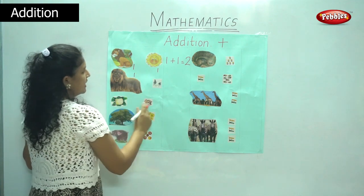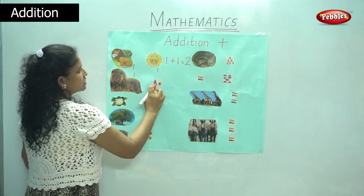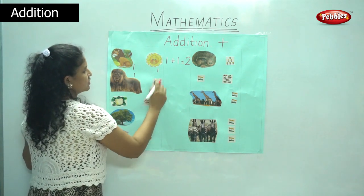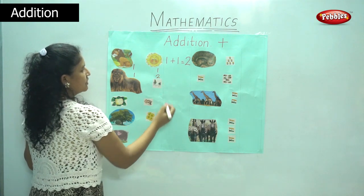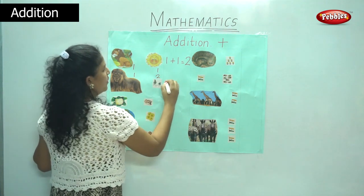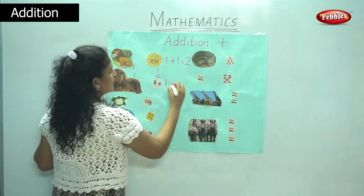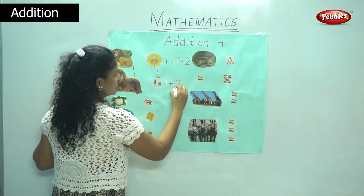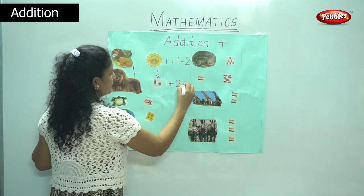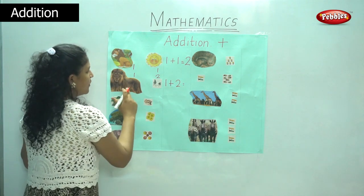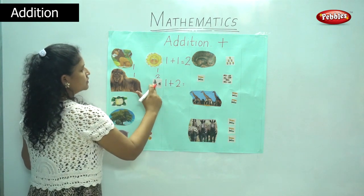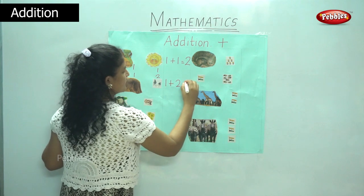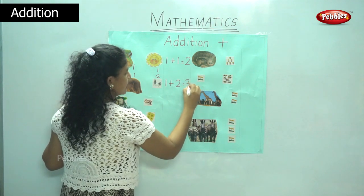In the next picture I have a picture of a lion — one lion and two parrots. So I am going to add up one plus two. When we add, one, two, three. So we have three animals.